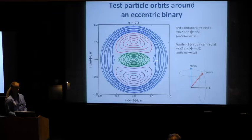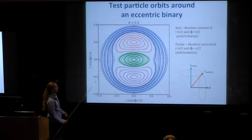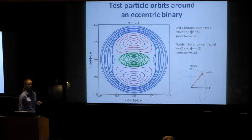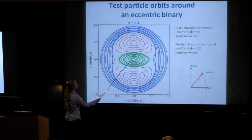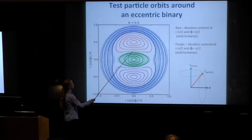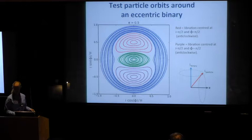Things become more complicated when we introduce some eccentricity into the binary orbit. This is the same phase plot — I·cos(φ) versus I·sin(φ) — but now for an eccentricity of 0.5. If we begin with an orbit at small inclination, we still precess about the binary's angular momentum vector. But if the inclination is above some critical value, instead of precessing about the angular momentum vector, we instead precess about the eccentricity vector. These introduce new types of orbits — librating orbits.